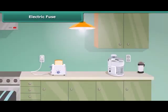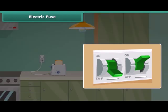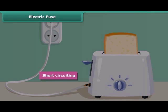Sometimes you may have seen the situation in your house where the fuse is blown off and the electric supply is cut off. Can you tell the reason for this? This is because of the enormous amount of heat produced wherever there is an excess flow of current due to short circuiting, overloading, or insulation failures of appliances.